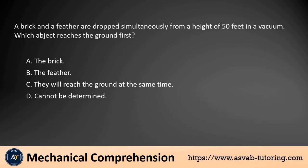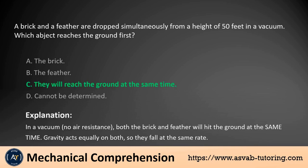A brick and a feather are dropped simultaneously from a height of 50 feet in a vacuum. Which object reaches the ground first? A. The brick. B. The feather. C. They will reach the ground at the same time. D. Cannot be determined. The answer is C. In a vacuum where there is no air resistance, both the brick and the feather will hit the ground at the same time. Gravity acts equally on both, so they fall at the same rate.